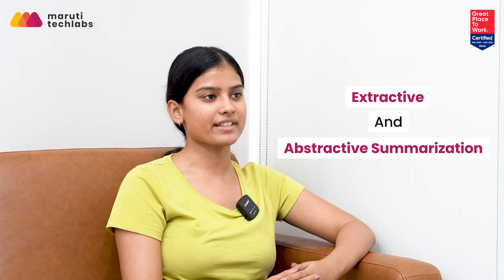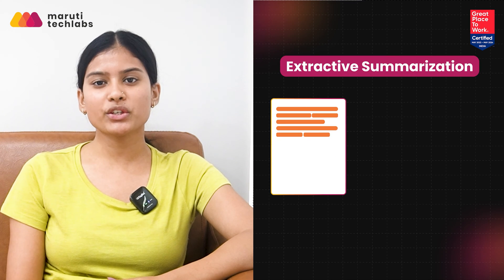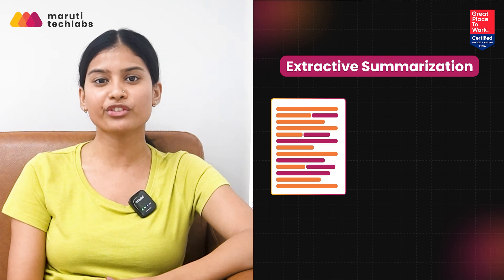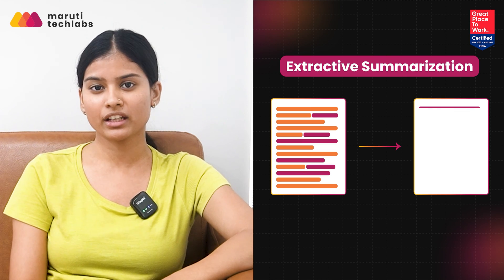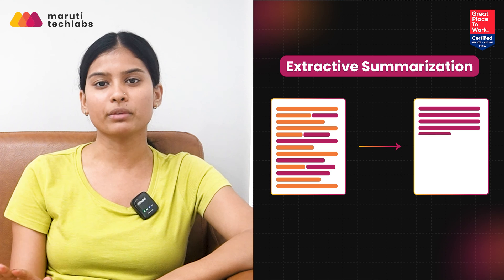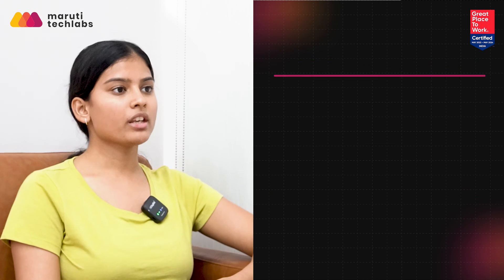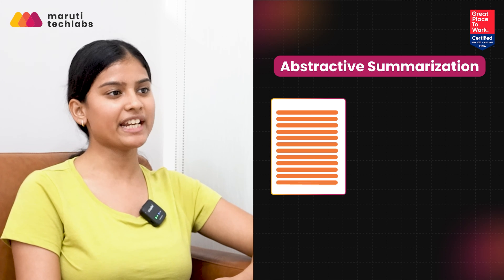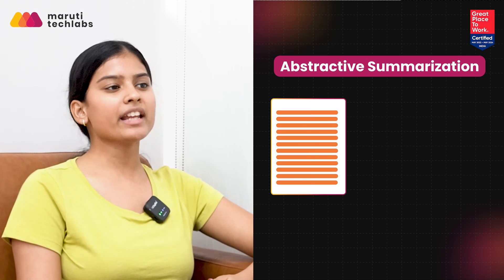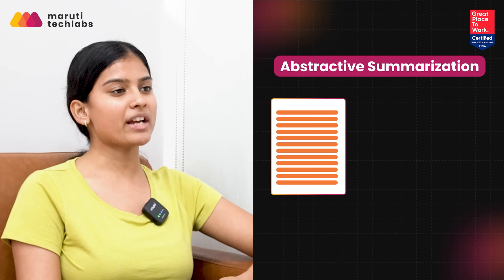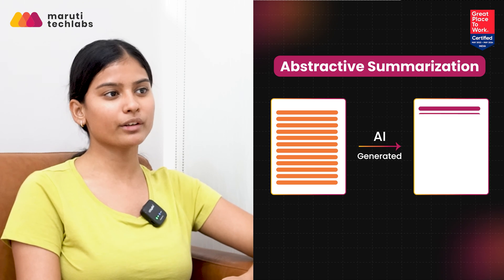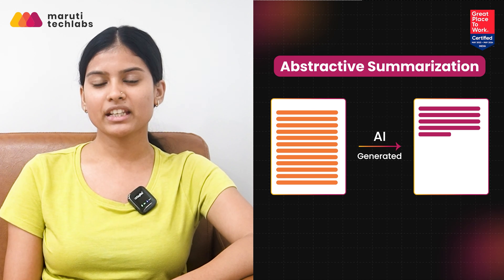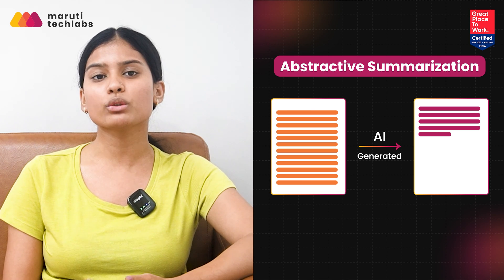Extractive and abstractive summarization. Extractive summarization identifies the most important sentences or phrases directly from the medical records and combines them into a summary — it's like highlighting the key parts. On the other hand, in abstractive summarization, a new set of text is created that doesn't exist in the original document. Imagine if the AI could read the medical records and then create a summary using its own words, just like a person would. This is how abstractive summarization works.